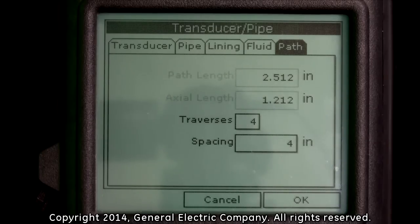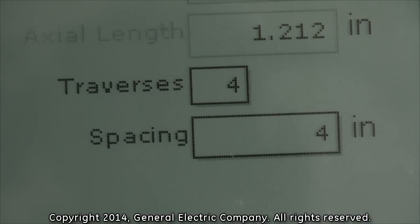On the path tab options display screen, you will see the number of traverses field and the spacing field.